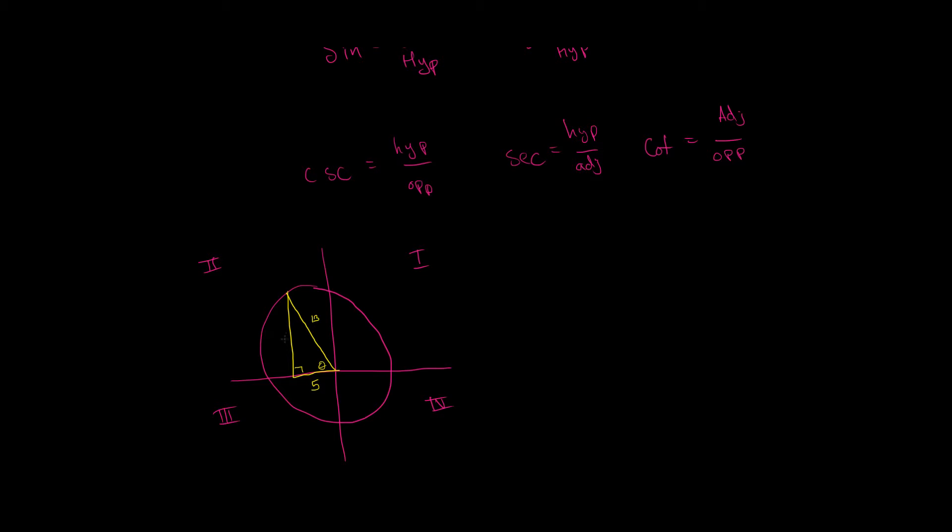So, now what we're going to do, this is a right triangle after all. Here's our theta. We're going to find out what this missing side is right here. And in order to do that, we're going to use Pythagorean Theorem. So, we're going to say that 5 squared plus b squared is equal to 13 squared. And then, we're going to work that out. We're going to end up with b is equal to 12.